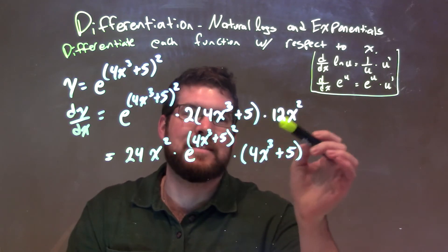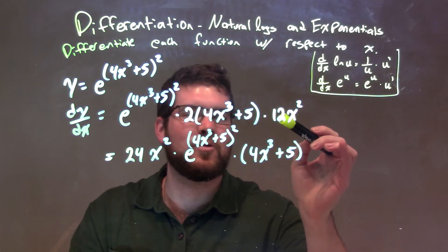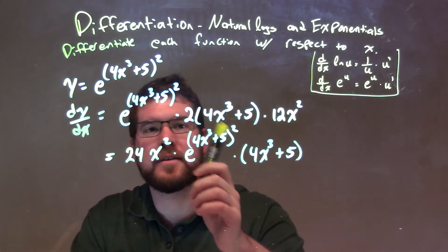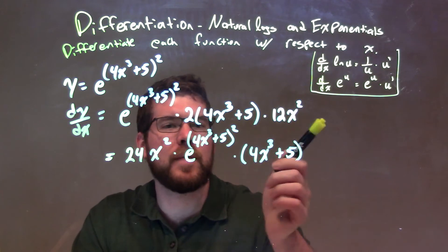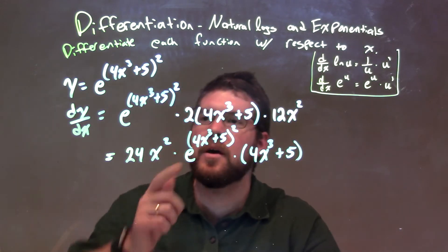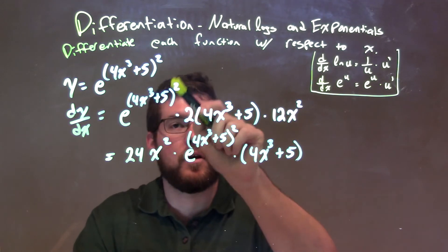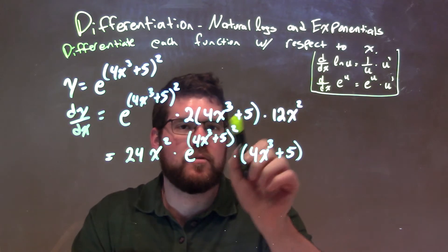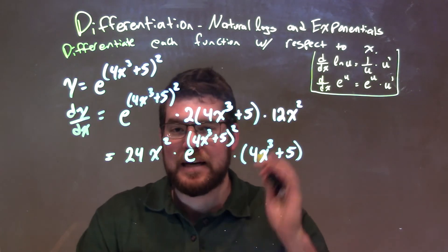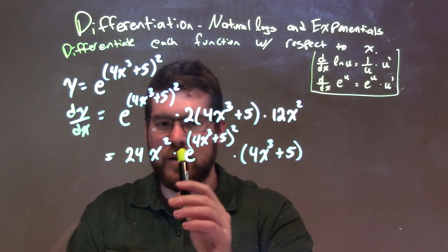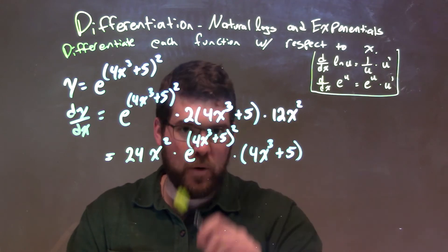So we're going to add the derivative of what's inside the parenthesis, it's just 12x squared. Now we can simplify this, with the 12 up front times this 2, gives us that 24. x squared comes next to it, times we bring down this right here, e to the 4x to the third plus 5 squared right there, times this parenthesis, 4x to the third plus 5. To give us our final answer again: 24x squared times e to the 4x to the third plus 5 squared, times 4x to the third plus 5.